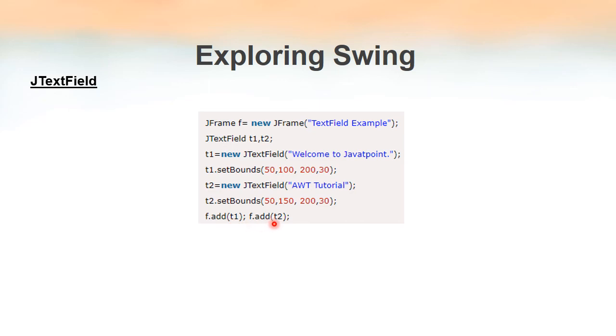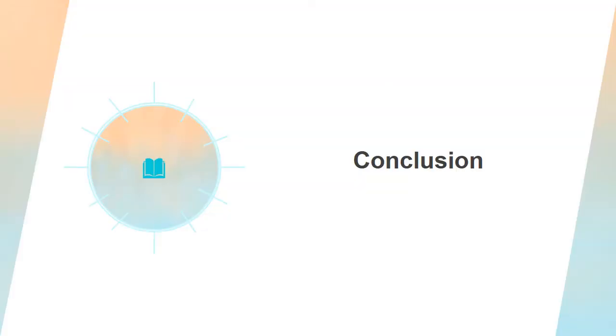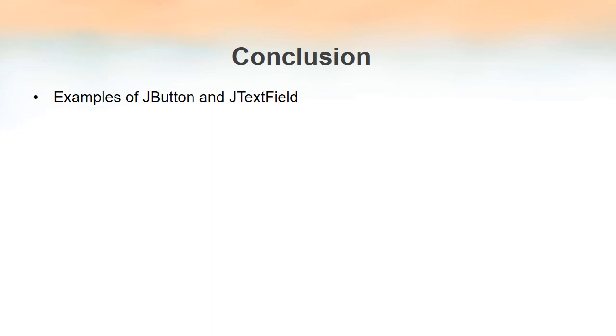When the frame is displayed, t1 will initially show "Welcome to Java T Point" and t2 will show "AWT Tutorial". The user can click in the text box, clear the content, and type new content. In this lecture we discussed the most commonly used Swing components — JFrame, JLabel, JButton, and JTextField — including their constructors and how to add them to a frame. Thank you.